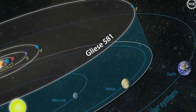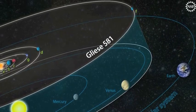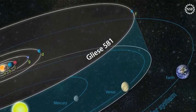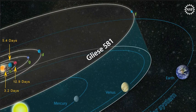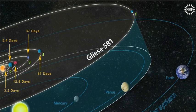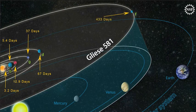The Gliese 581 system is home to at least 6 worlds, each orbiting the star at 3.2, 5.4, 12.9, 37, 67, and 433 days, respectively.